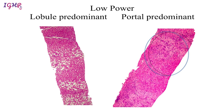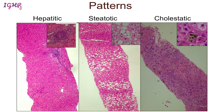Whenever we assess a liver biopsy slide we should first view it at low power, and we should be able to determine whether it is a lobule-predominant pathology or a portal-predominant pathology, or both. In a lobule-predominant pathology the portal tract remains relatively quiet and the major pathology lies within the lobule. In a portal-predominant pathology the problem lies predominantly within the portal tract, as seen in this case where there is marked expansion of the portal tract with less significant lobular changes.